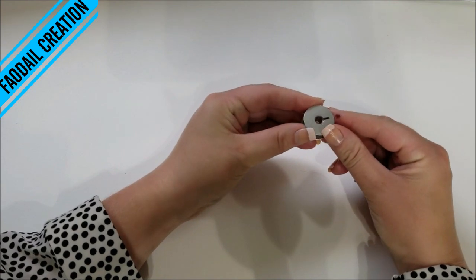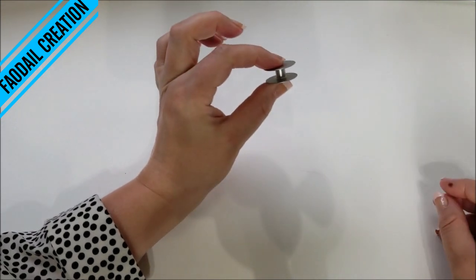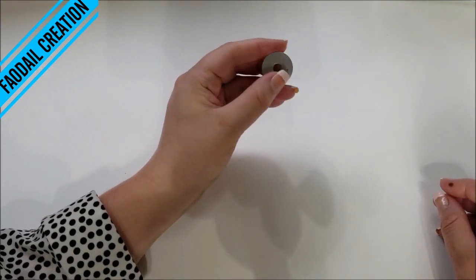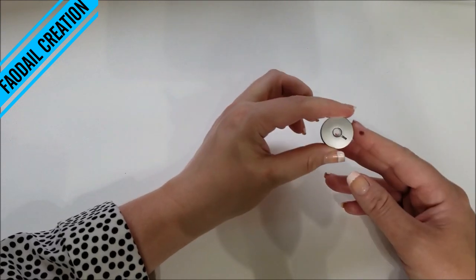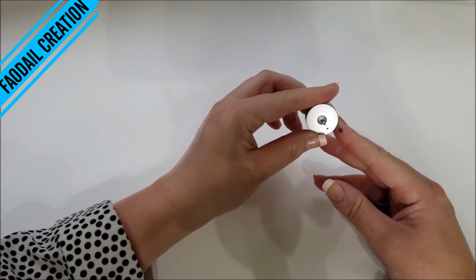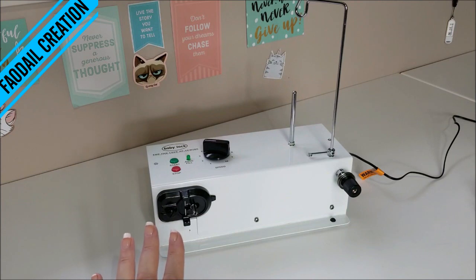Bobbins for a mid arm or long arm are a little bit different from the bobbins we put in our regular sewing machine. This is an M-class bobbin, and this is what the bobbin winder looks like for a long arm or a mid arm for your Baby Lock.